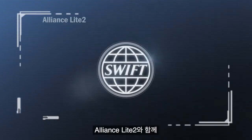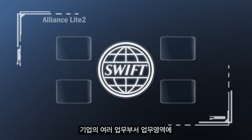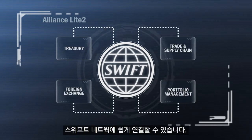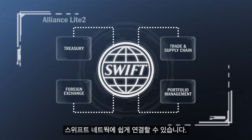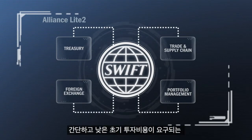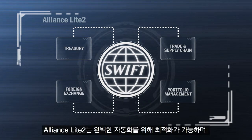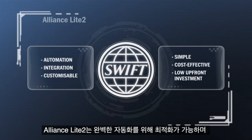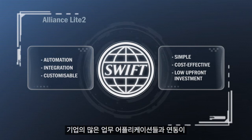With Alliance Lite 2, it's easy to connect multiple departments to the Swift network — simple and cost-effective with little upfront investment. Alliance Lite 2 is customizable to support full automation and integration with scores of business applications.